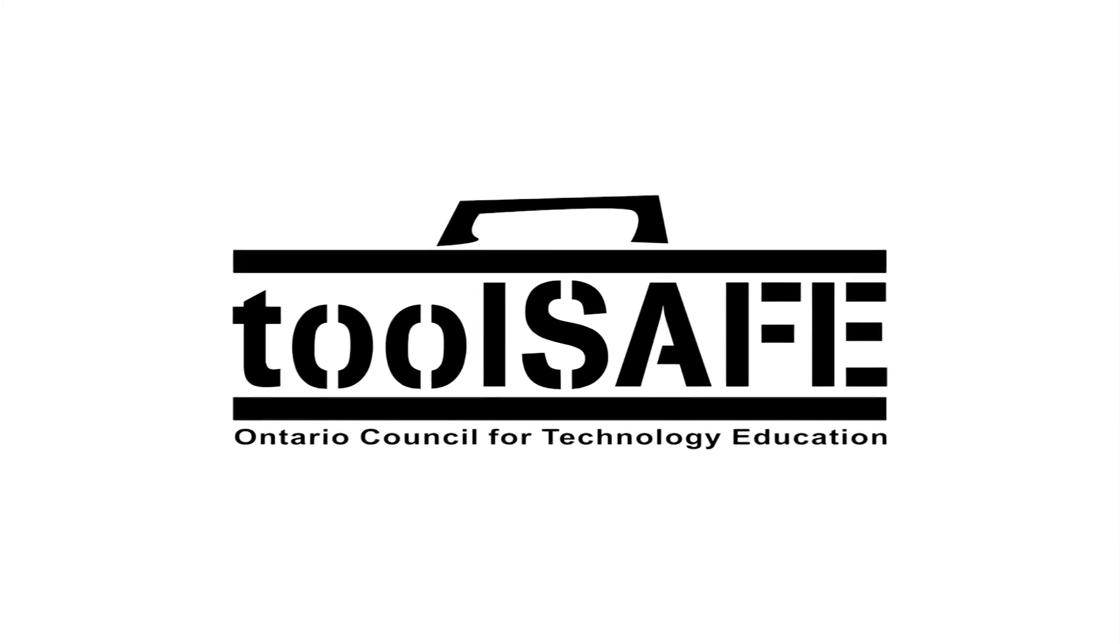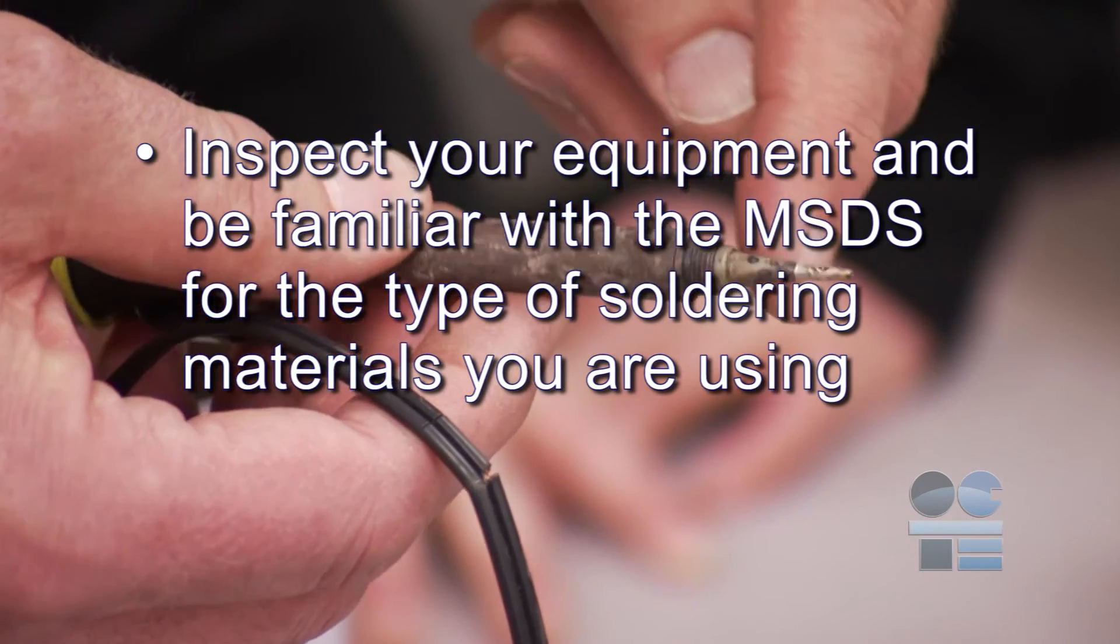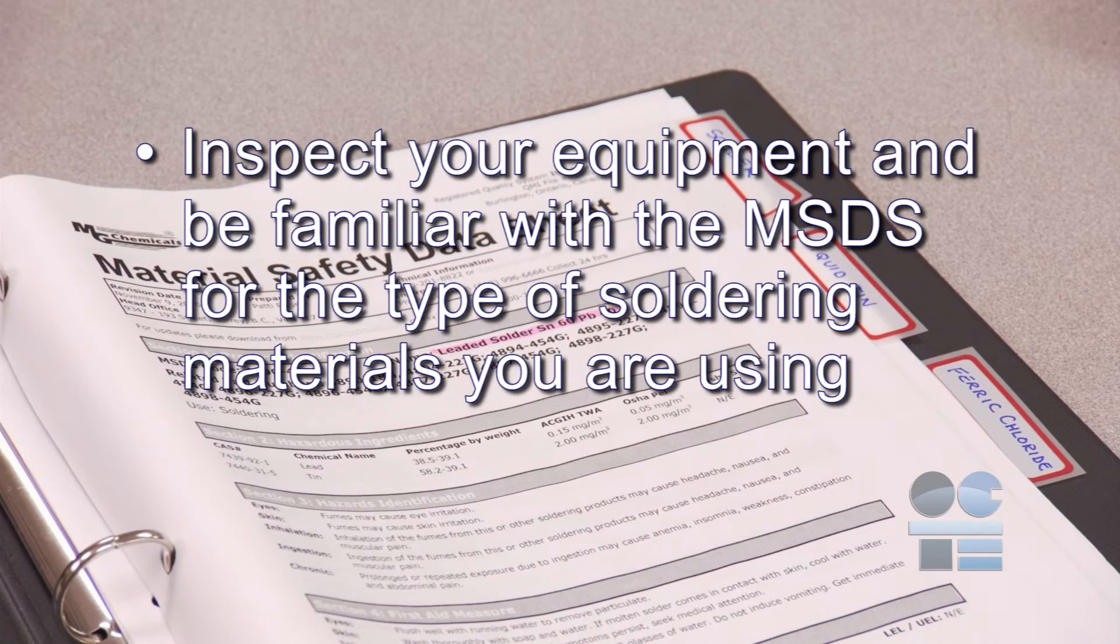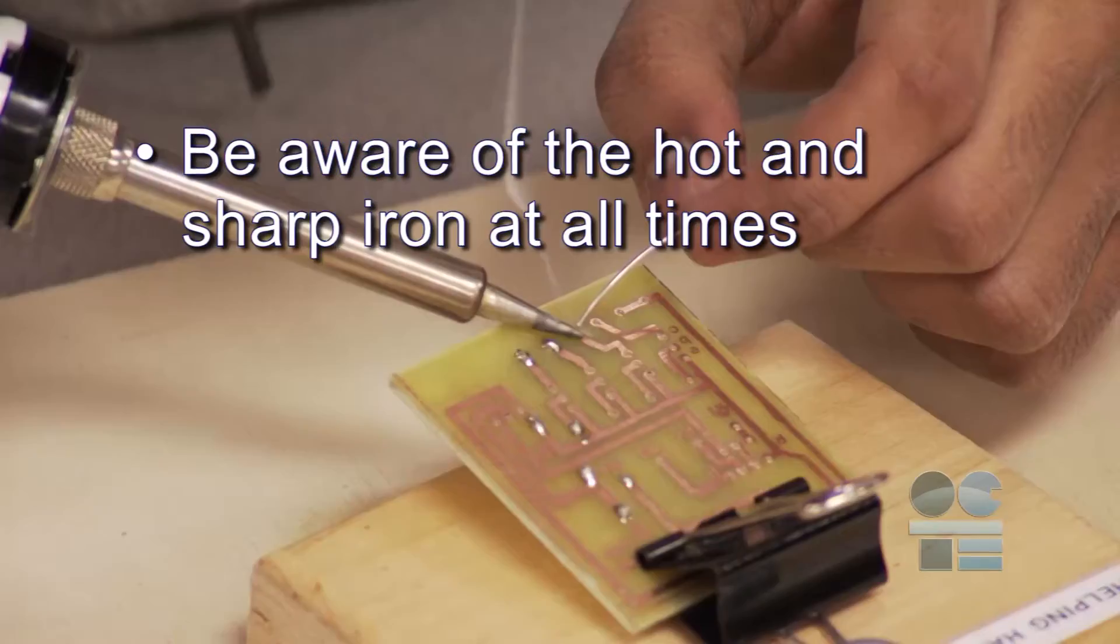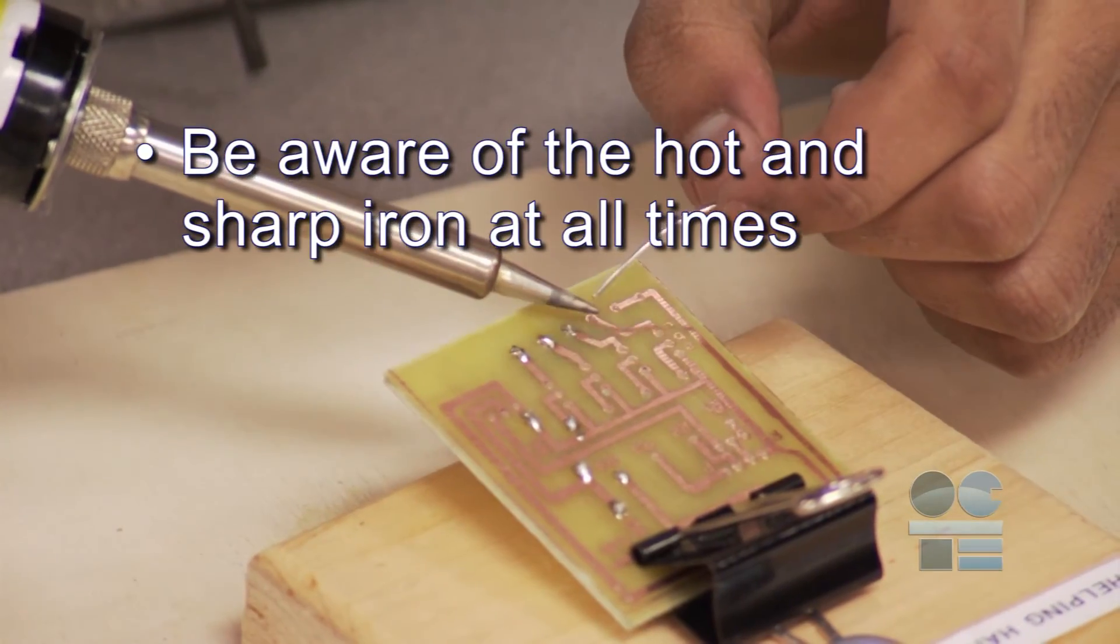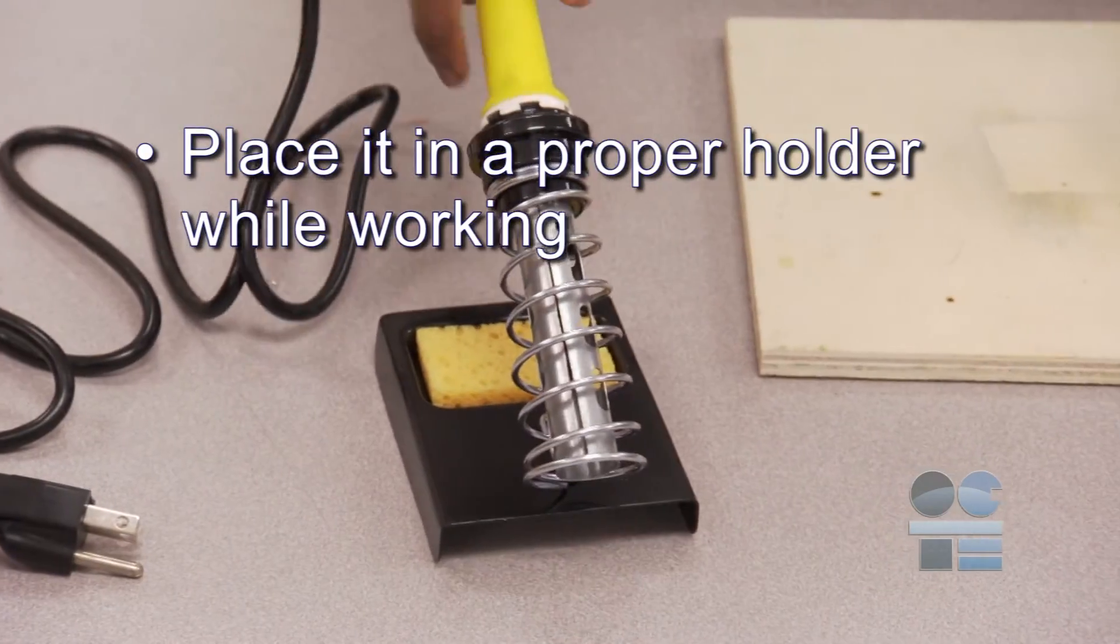Okay, let's do our soldering tool safe review. Inspect your equipment and be familiar with the MSDS for the type of soldering materials you are using. Only perform soldering in a well-ventilated area. Be aware of the hot and sharp iron at all times. Place it in a proper holder while working.